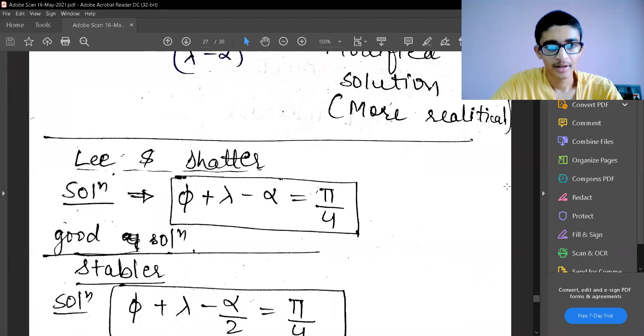Earlier we have seen the Merchant's solution, then we have seen the modified Merchant solution that was coming by modifying the value of shear strength of the material.